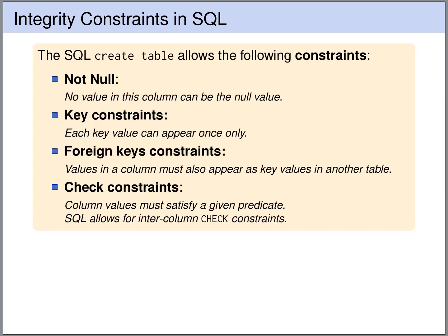The SQL CREATE TABLE statement allows us to express the following constraints. We have already seen the NOT NULL constraint, which forbids certain attribute values from being null. We can express key constraints, which enforce that an attribute value appears only once in the table, so it uniquely identifies the tuple in the relation. We can express foreign key constraints, which say that a certain attribute value has to appear as a key value in another table.